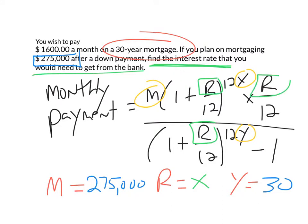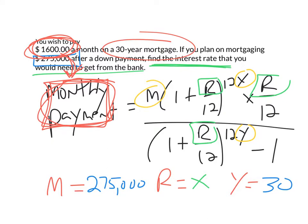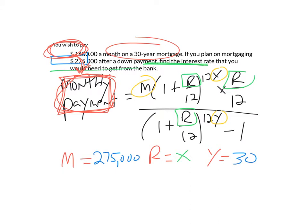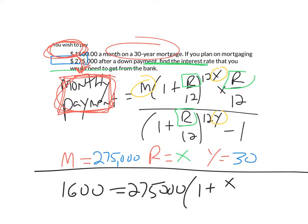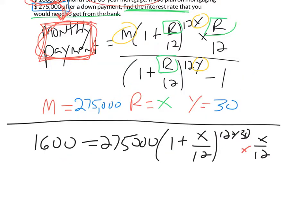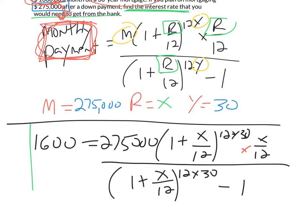But since we have our unknown on the right, that means you need to know what's going on on the left. Here you wish to have a $1,600 monthly payment. So we're going to set up an equation where the monthly payment is $1,600. That equals our M, $275,000, times (1 plus X over 12) raised to the 12 times 30 power, times X over 12, because our interest rate is what we're solving for, all over (1 plus X over 12) to the 12 times 30 power, take away 1. So this is the equation that I want to solve in order to figure out what my R value is going to be.